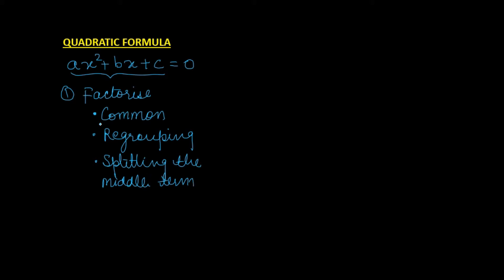But what if we are not able to factorize using any of these methods? Normally, we factorize and equate the factors to 0 to get the values of x. If we are not able to factorize, then we find the solution of ax² + bx + c = 0 by the quadratic formula.